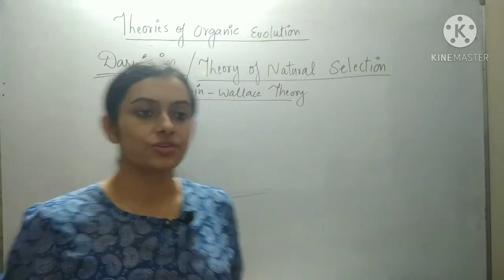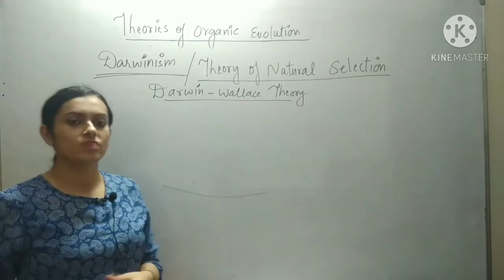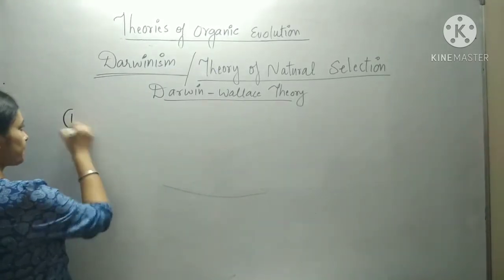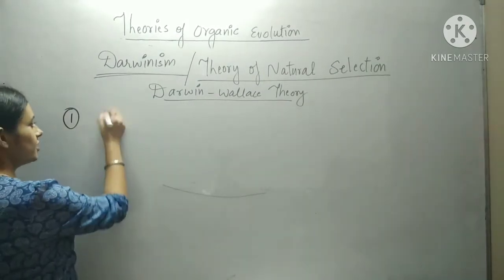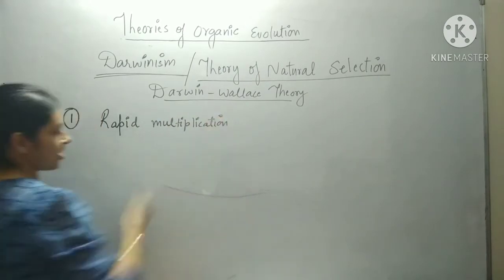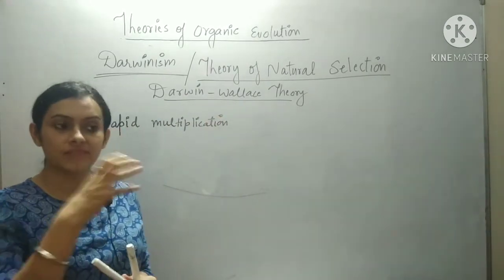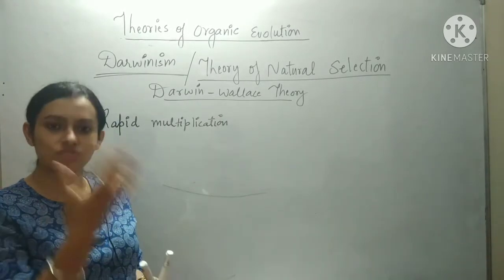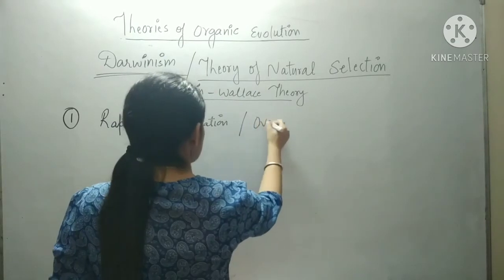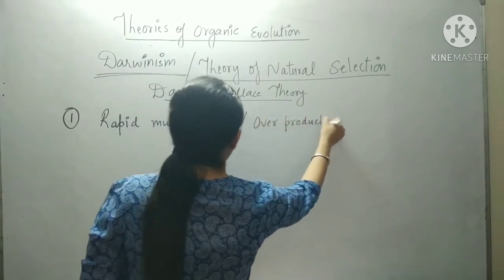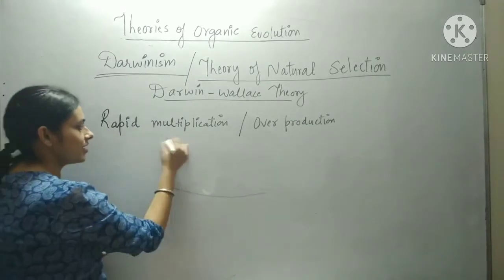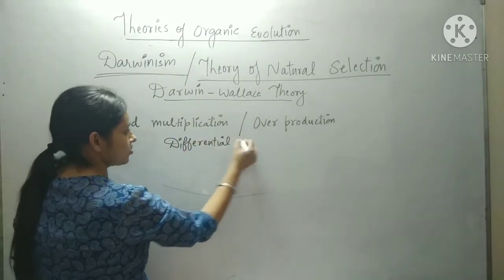The next theory is Darwinism, or the theory of natural selection. According to Darwin, different individuals or populations show rapid multiplication — they multiply very fast. Organisms do overproduction, but many organisms die, so the actual survivors get reproduction opportunities. We can say that different organisms have different reproduction rates — this is called differential reproduction.